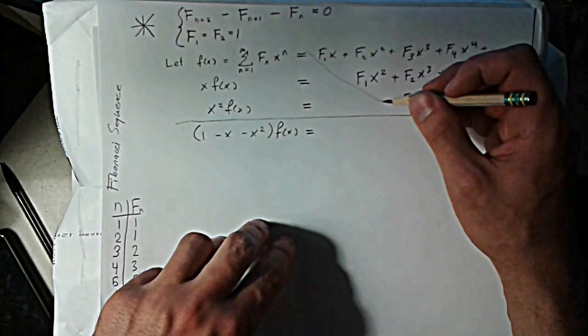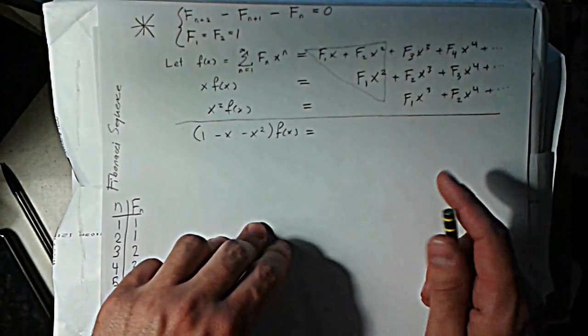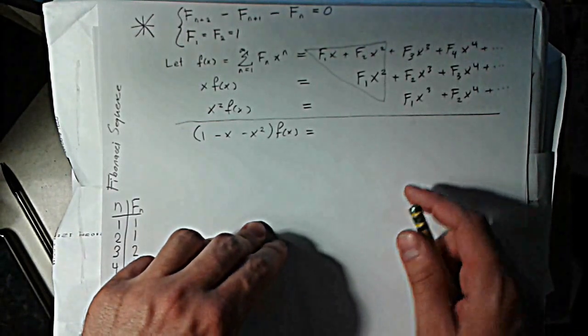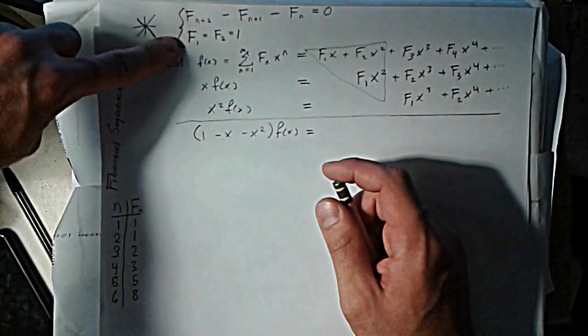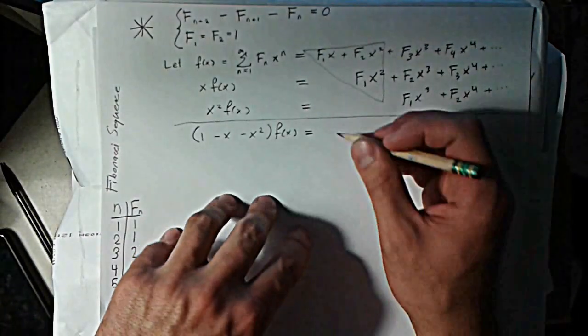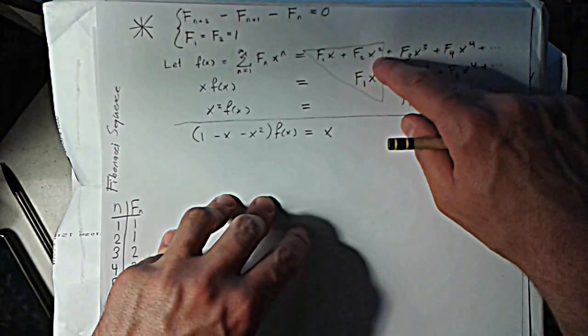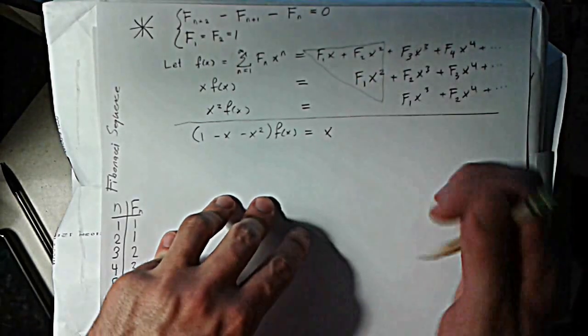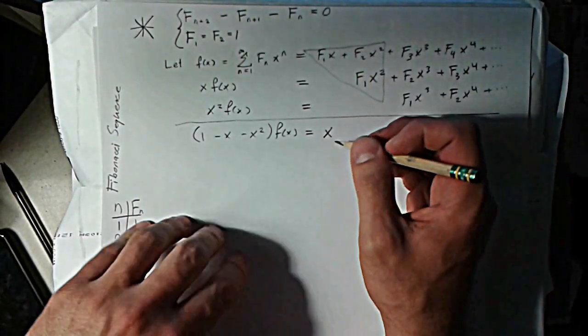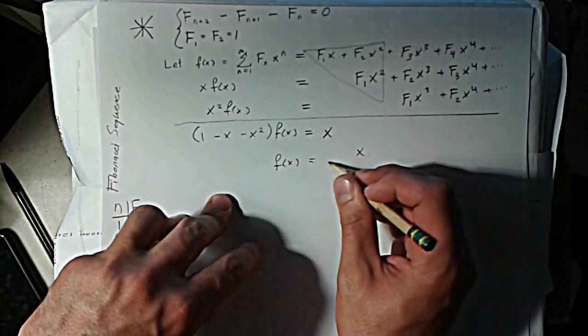So over here on the left, that's just 1 times f(x) minus x minus x² times f(x). And over here, these cancel out, these cancel out, they all cancel out. All I'm left with is this triangle of values here. I can just write F₁x, that's just x. Here I have 1 times x² minus 1 times x², so I just have x here. I can solve for f(x), and we see that we just get this nice rational function.